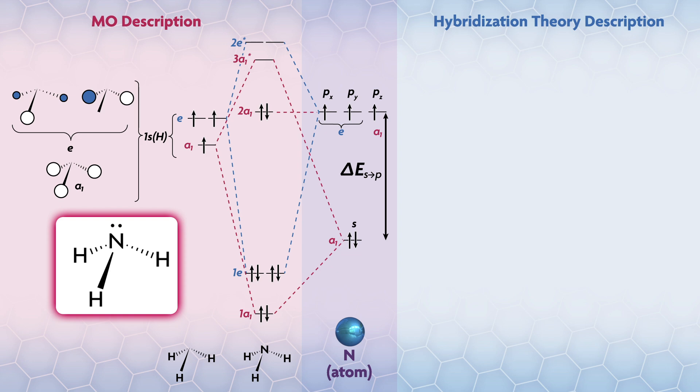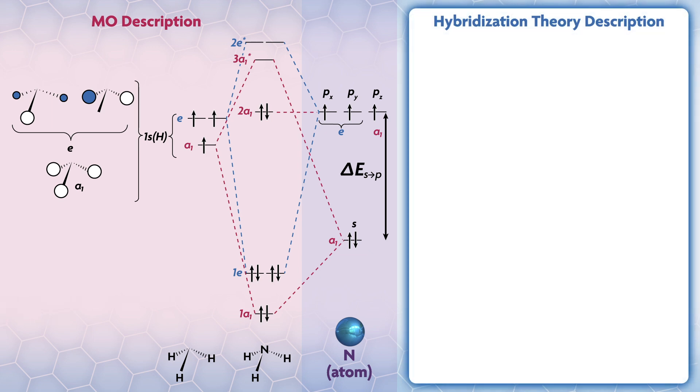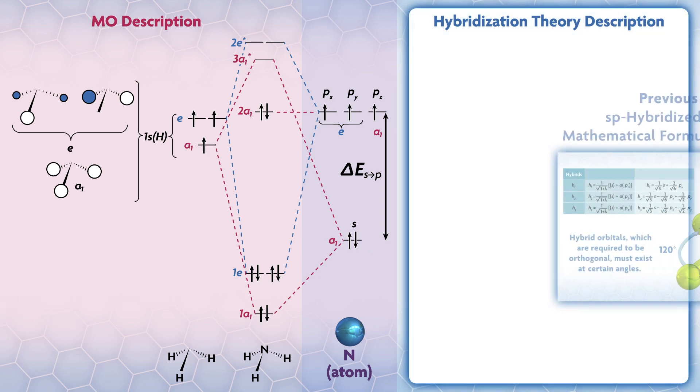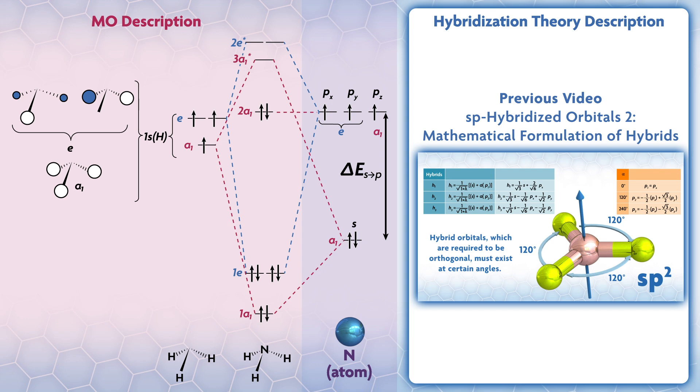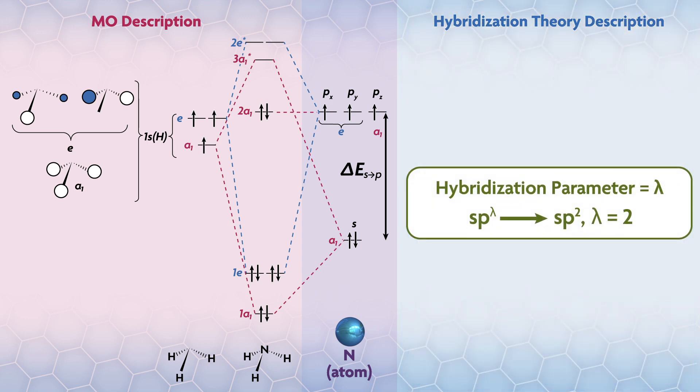Now let's do the hybridization theory analysis. For this we'll need two equations which we introduced in the previous video in the series, but the equations are pretty easy to understand. These equations use the hybridization parameter which is given the symbol λ. In hybrids we write sp^λ, for example, for sp² λ equals two.